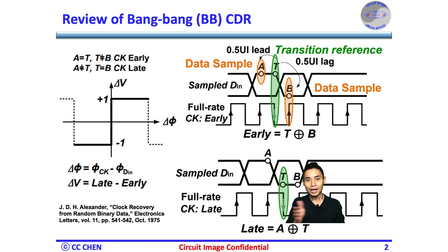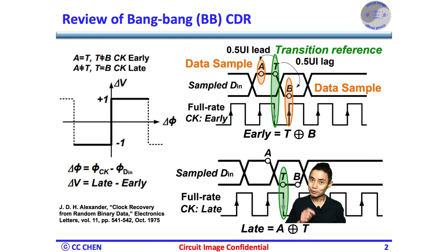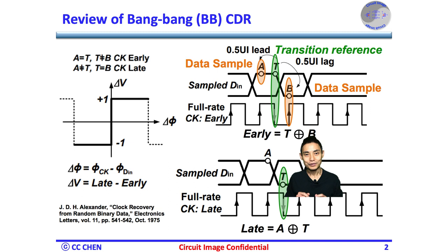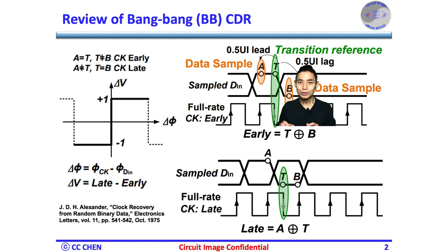On the other hand, if the clock phase is later, then both delta sample B and transition sample T will have the same sign but different from delta sample A. Therefore, an XOR of A and T may provide the late clock information to push the VCO to run faster, and another XOR of T and B may provide the early clock information to push the VCO to run slower for clock phase correction.